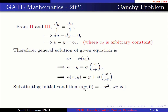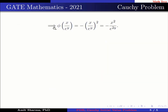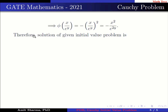Substituting the initial condition u(x, 0) equals minus x squared, we get phi(x) equals minus x squared. This implies phi(x divided by e to the power y) equals minus (x divided by e to the power y) squared, which equals minus x squared divided by e to the power 2y. Therefore, the solution of the given initial value problem is u(x, y) equals y minus x squared divided by e to the power 2y.